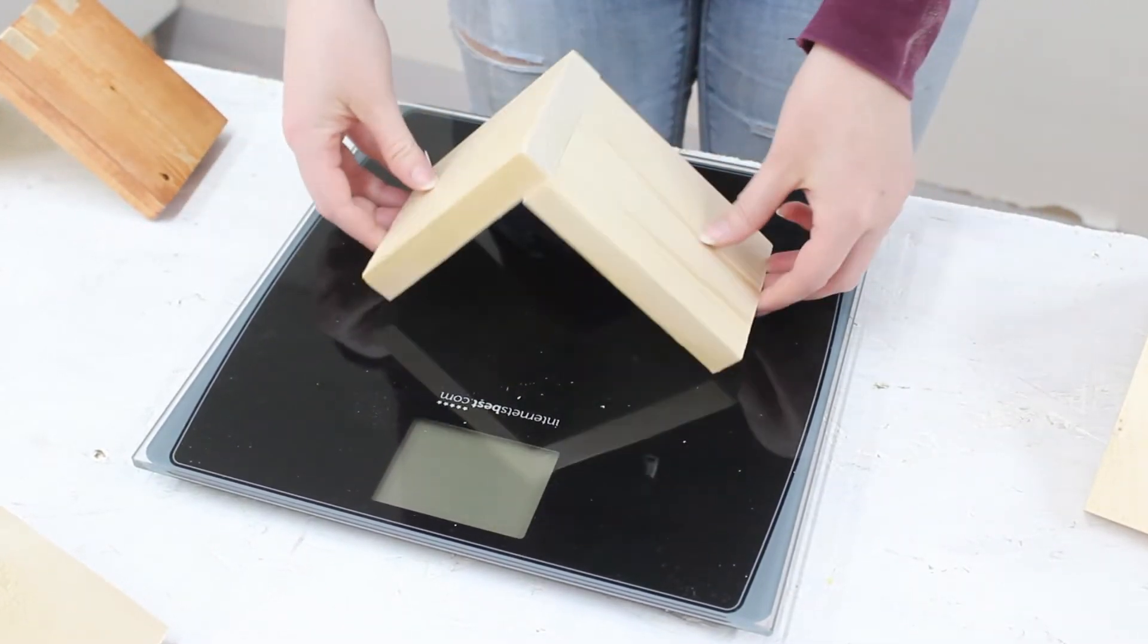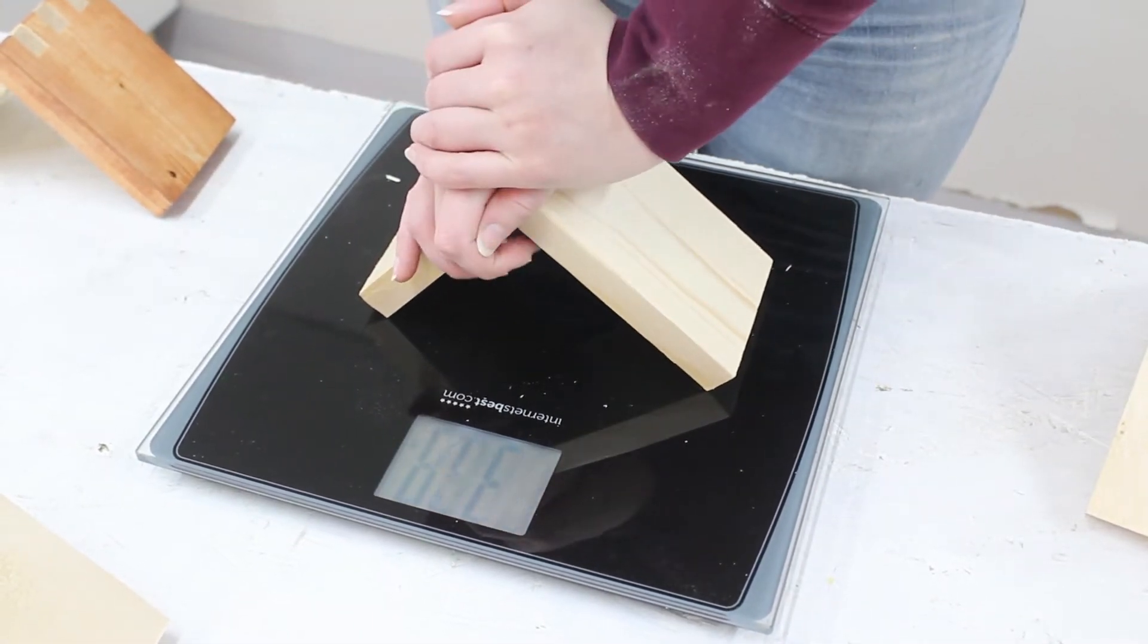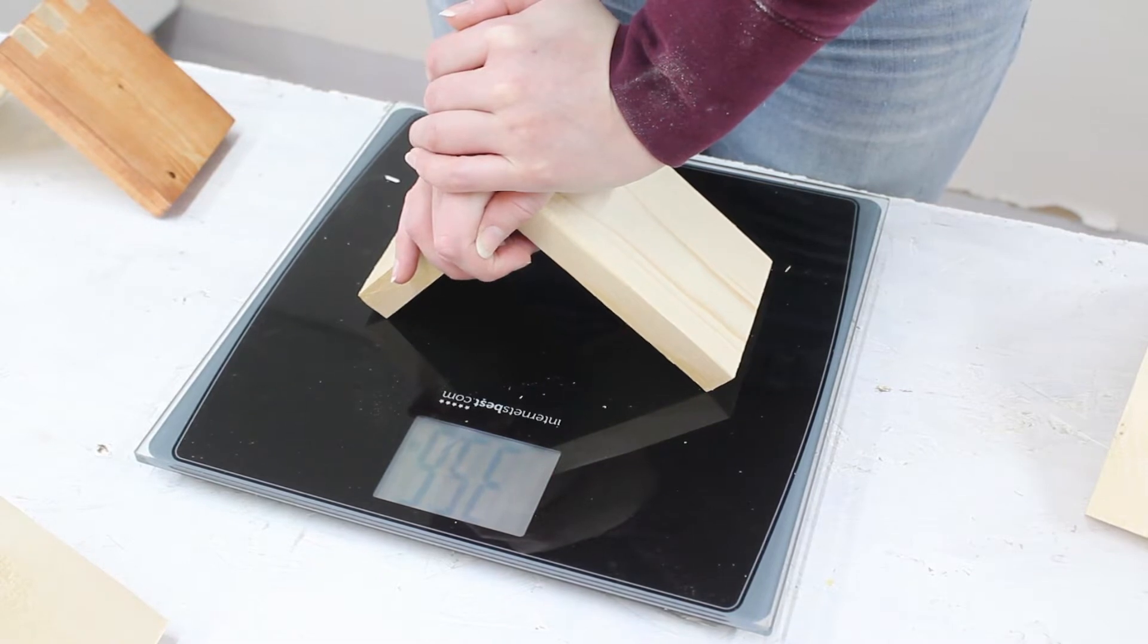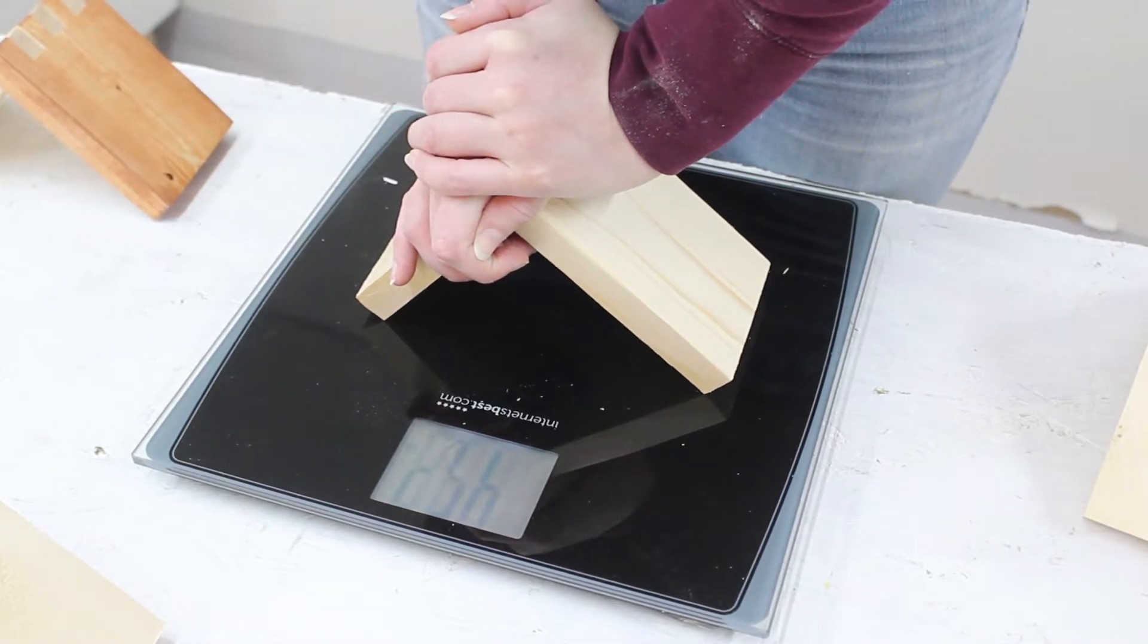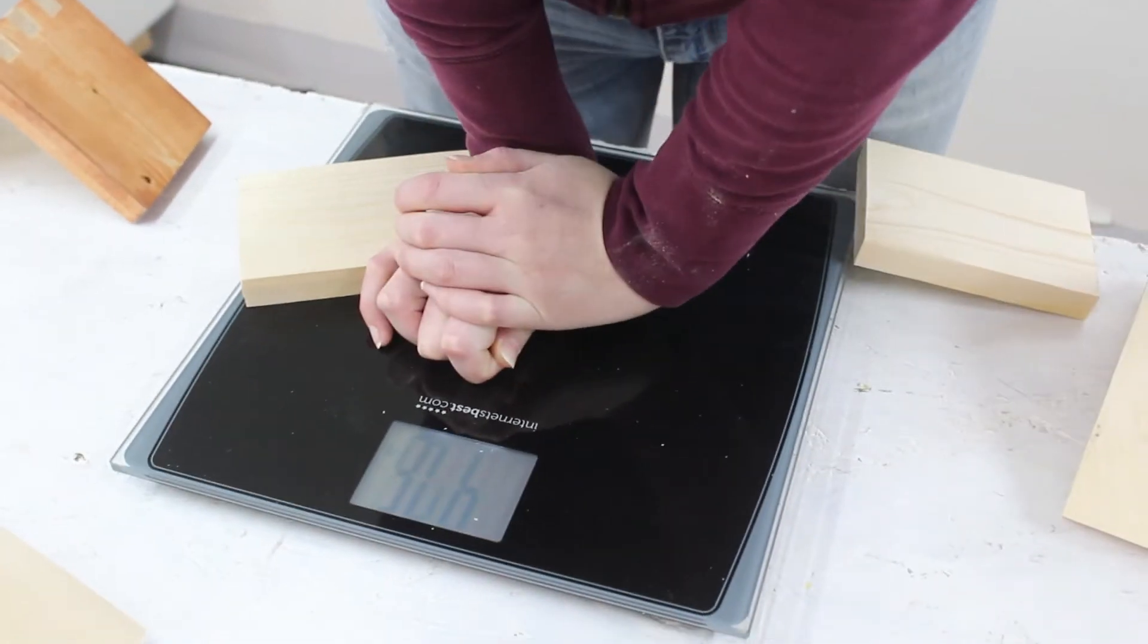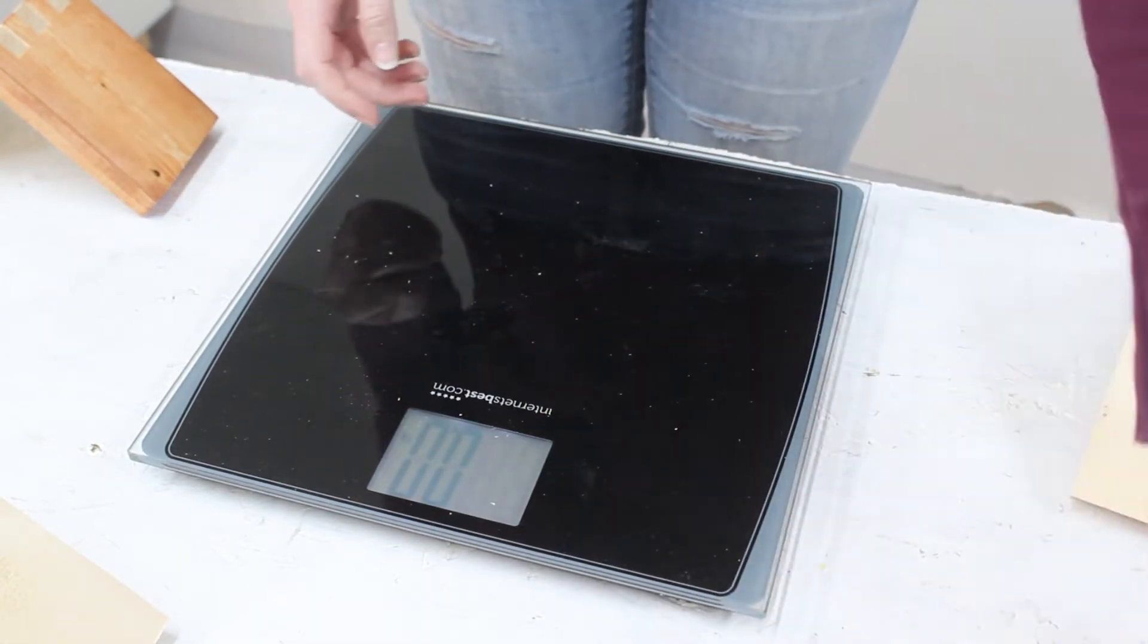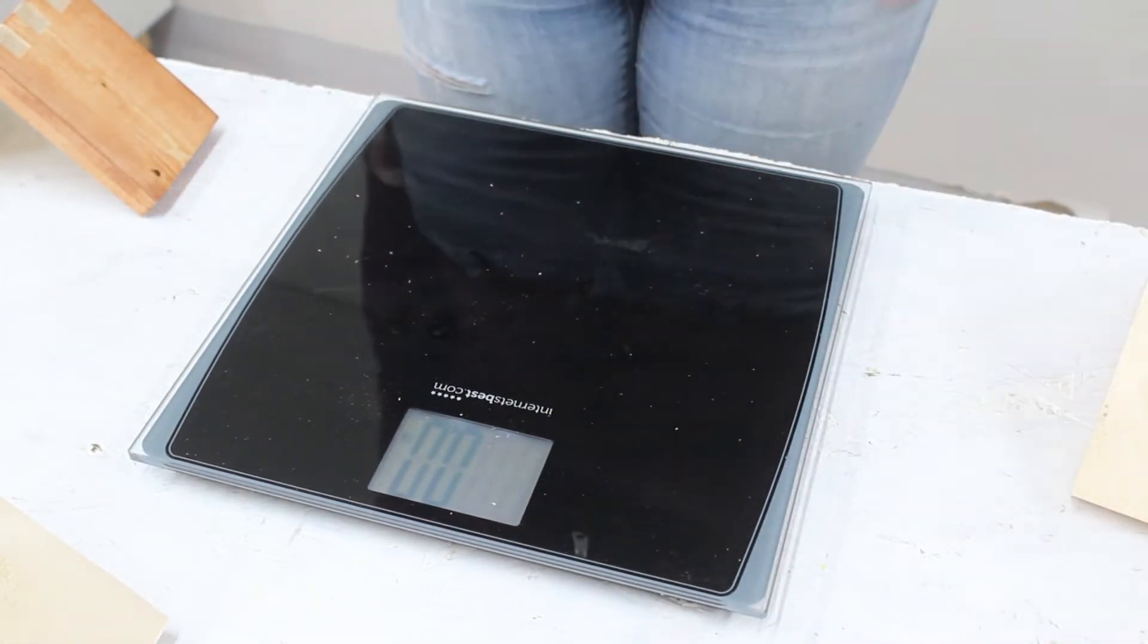So I'm just going to start by putting this on the scale and slowly putting weight on the joint. We are at 35 pounds, 47, 60 was where I think we fell. So this took 60 pounds of weight before it broke.